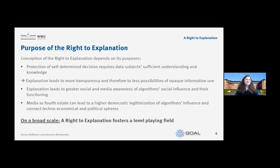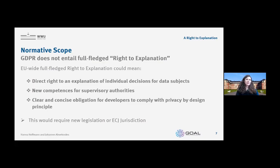A transparent intermediary can really reduce information asymmetry between the data subject and the data controller, creating more balance between the two. On a broad scale, a right to explanation really fosters a level playing field. As for the normative scope — what it could mean — there are different possibilities: first, a direct right to explanation of the individual decision for the data subject; second, new competences for supervisory authorities; and third, more clear and concise obligations for the developers to comply with privacy by design principles. All three possibilities need new legislation or at least new jurisdiction from the European Court of Justice.